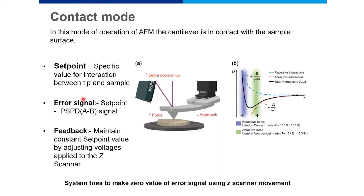In contact mode, the system always tries to make the error signal value zero using the Z-scanner. In the Lennard-Jones potential, the cantilever is always operating in the repulsive regime — the short-range repulsive force region on the right-hand side of the potential curve.